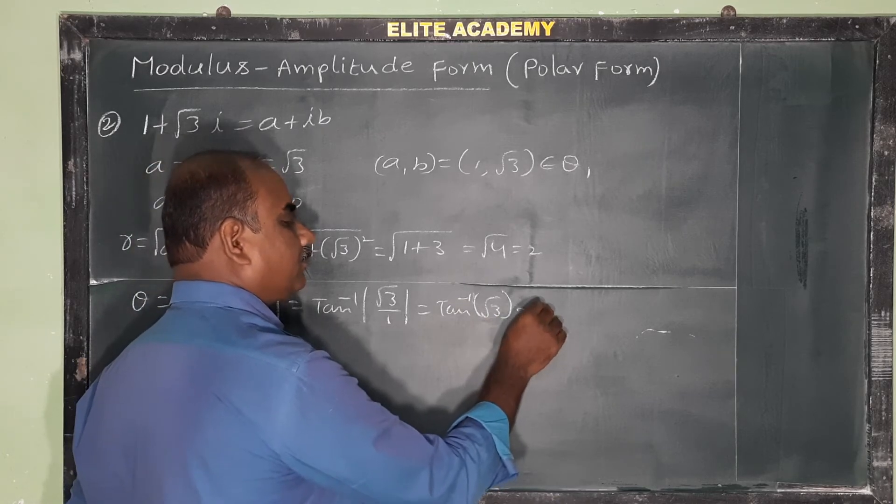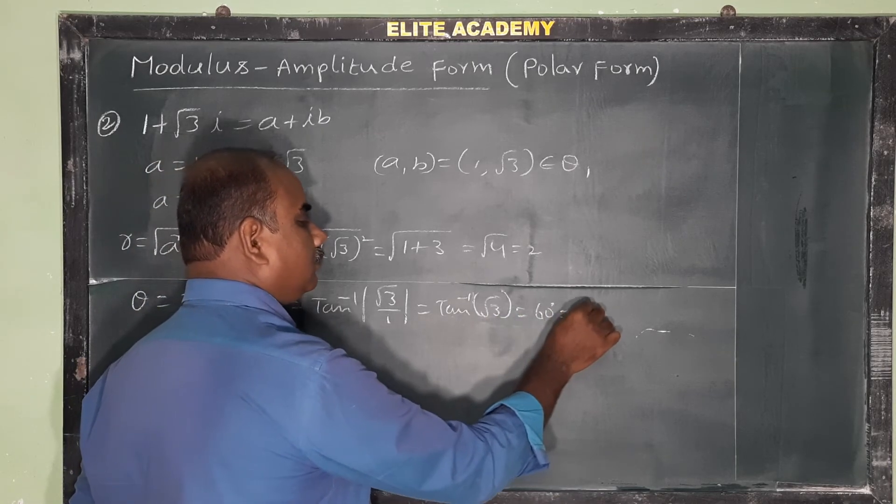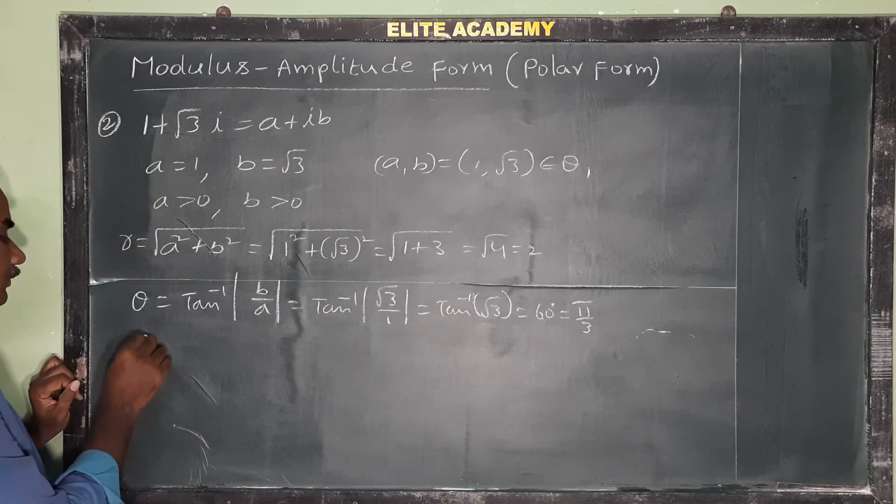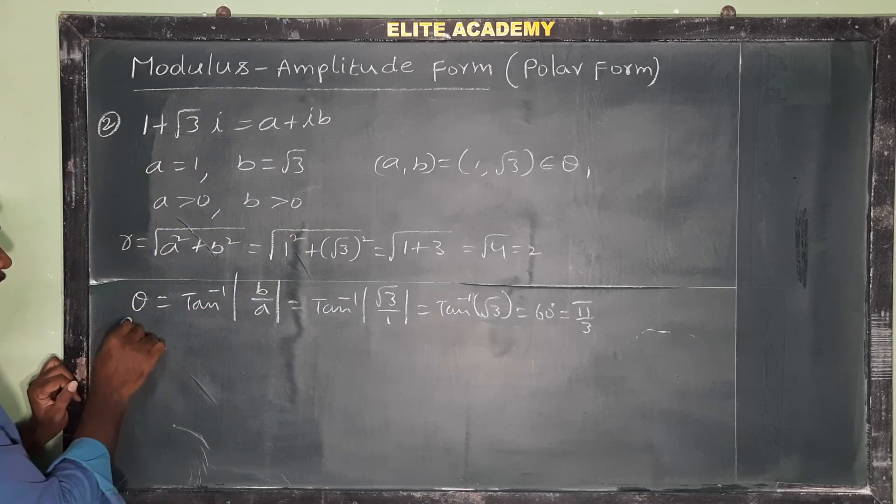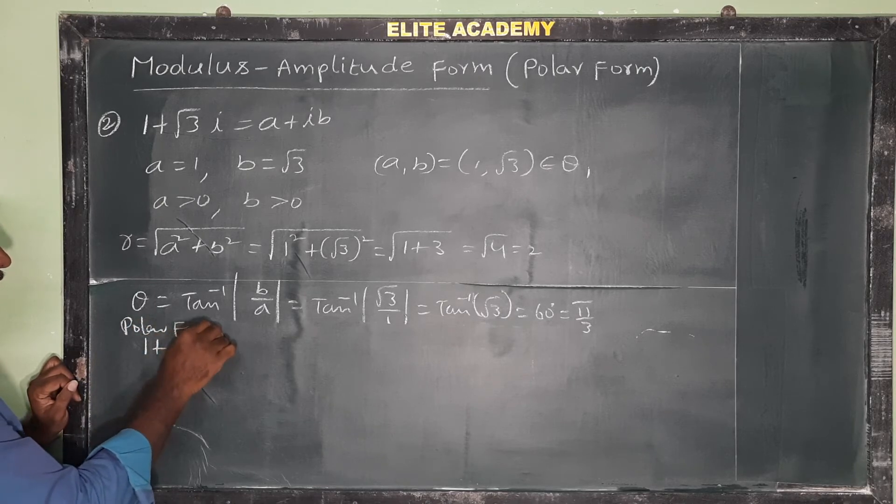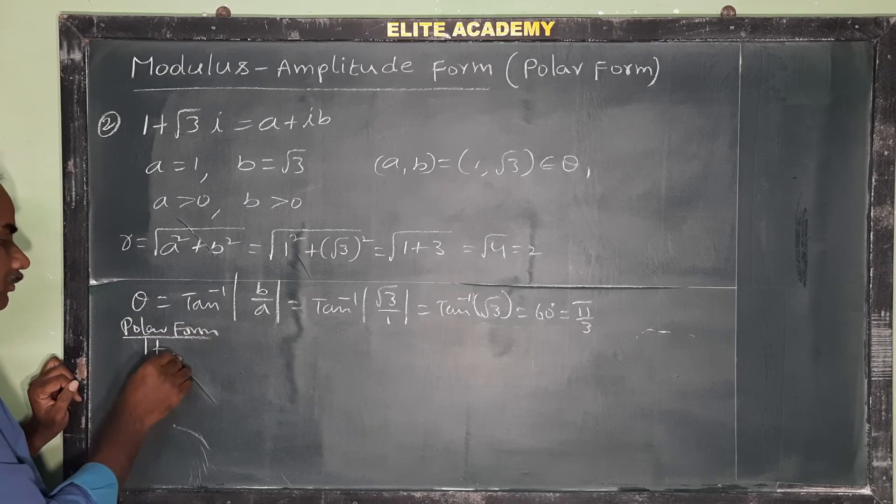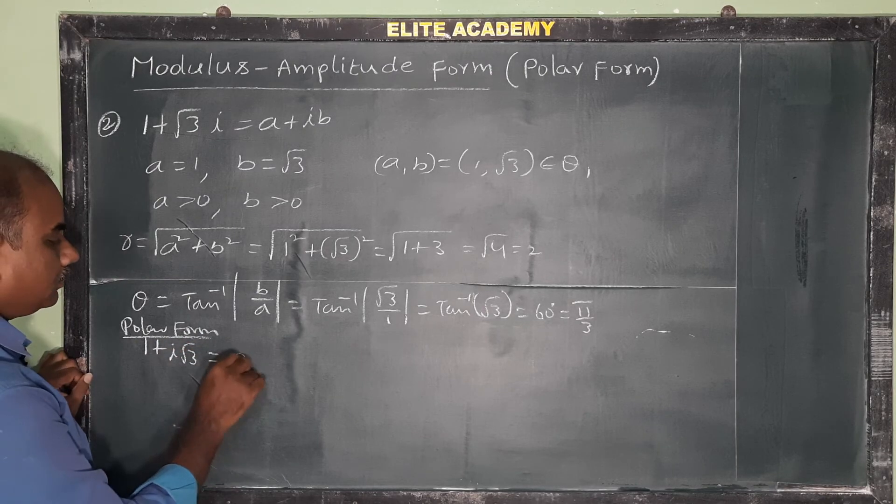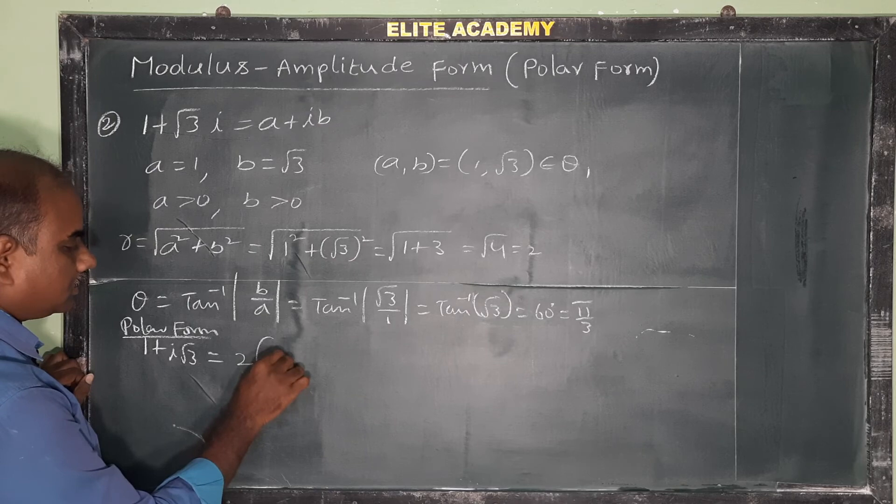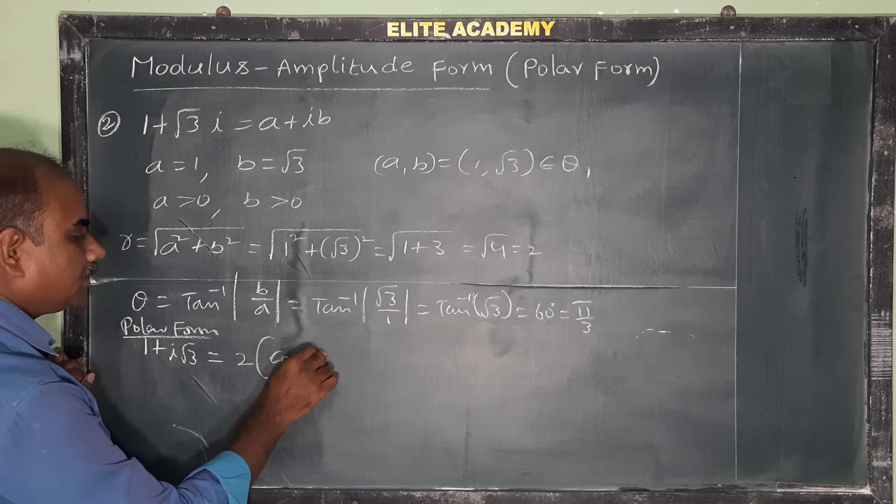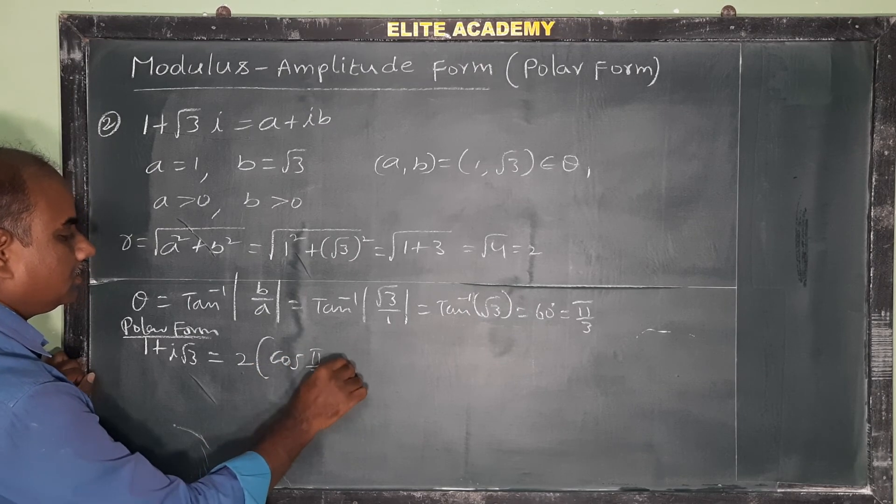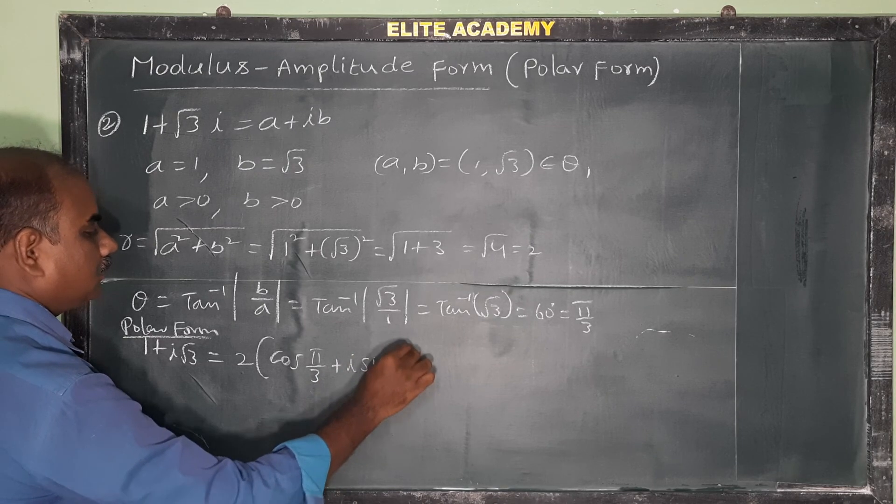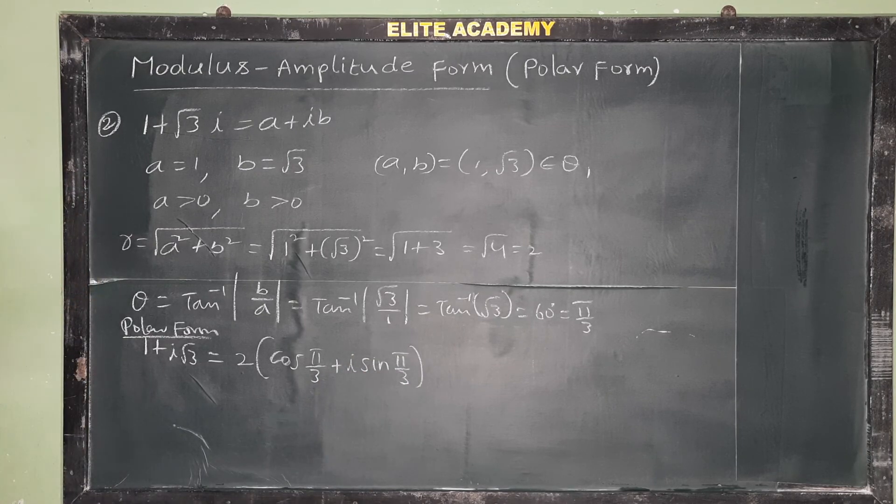Therefore, the polar form of 1 plus i root 3 is equal to r into cos theta plus i sin theta, which means 2 into cos pi by 3 plus i sin pi by 3.